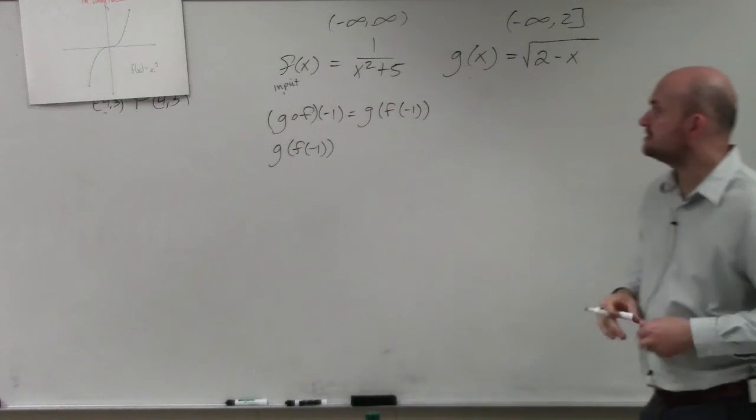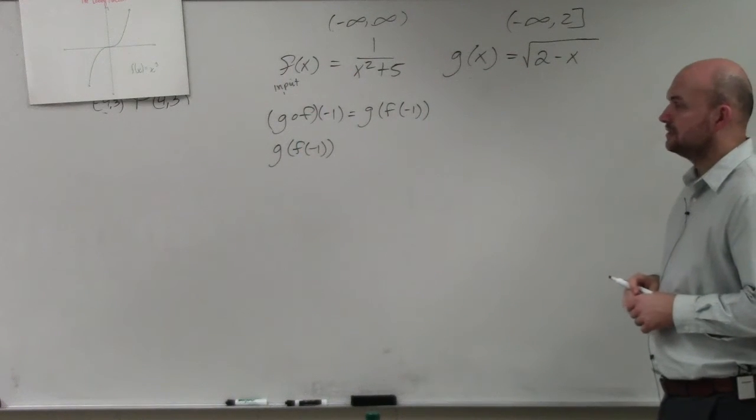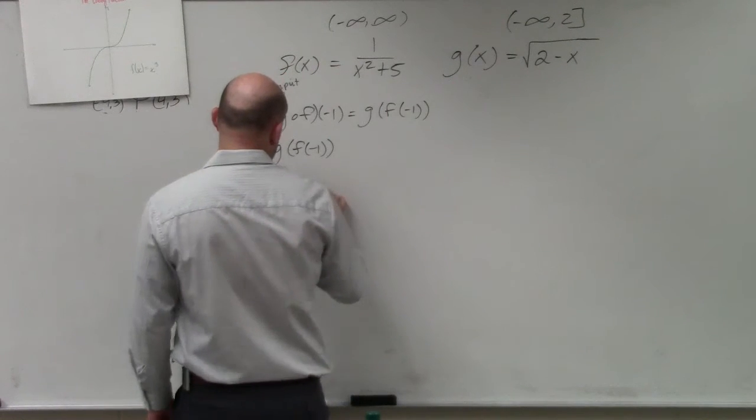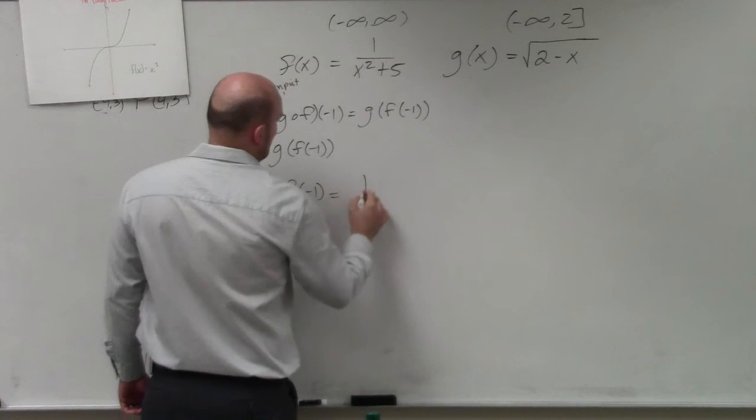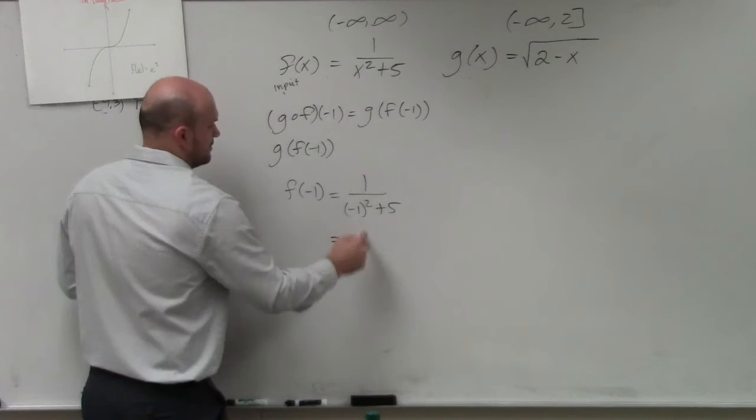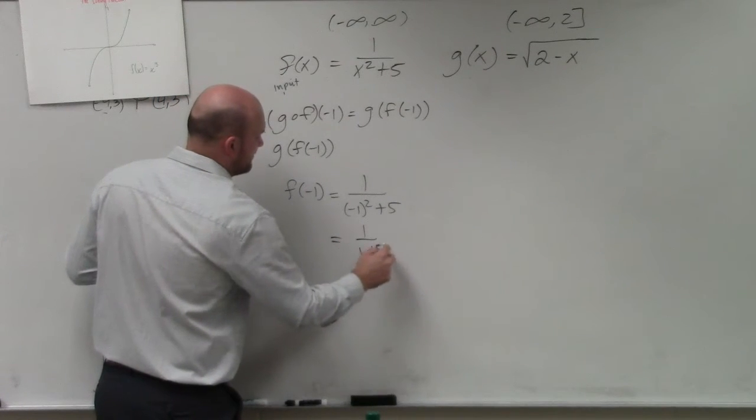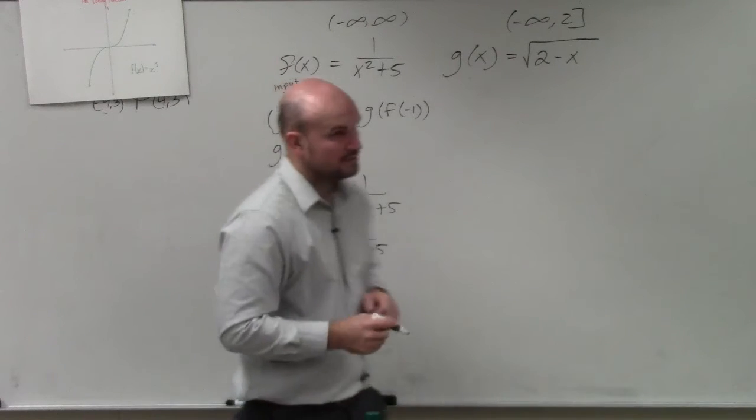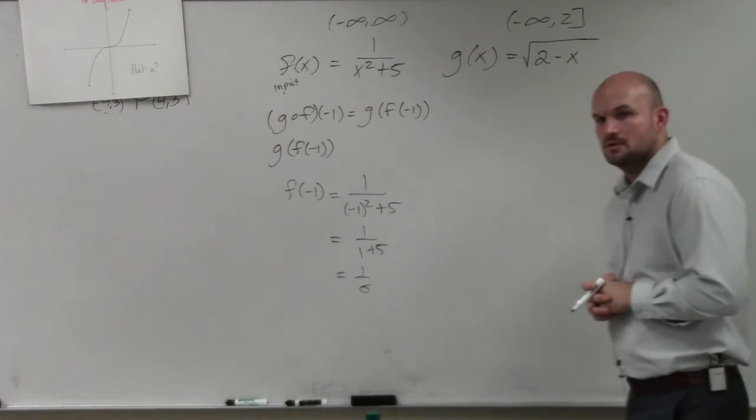Well, let's figure out what f of negative 1 is. So you see f of x right here. Let's figure out what f of negative 1 is. That's 1 over negative 1 squared plus 5. 1 over 1 plus 5, that's equal to 1 over 6, correct?